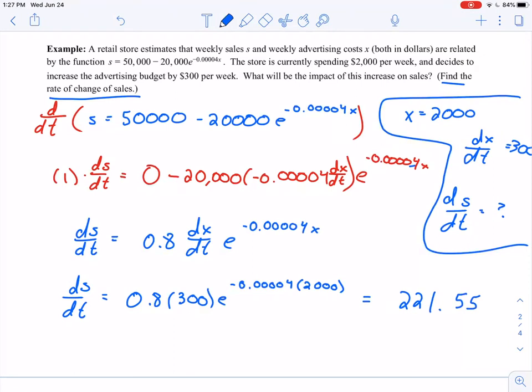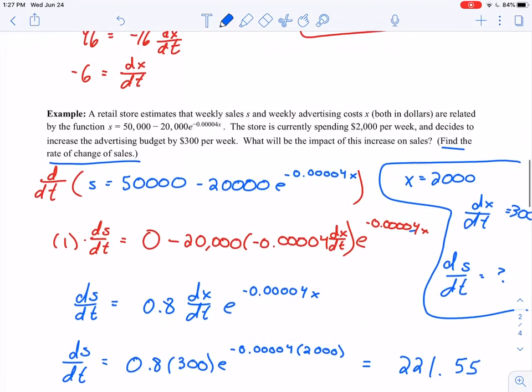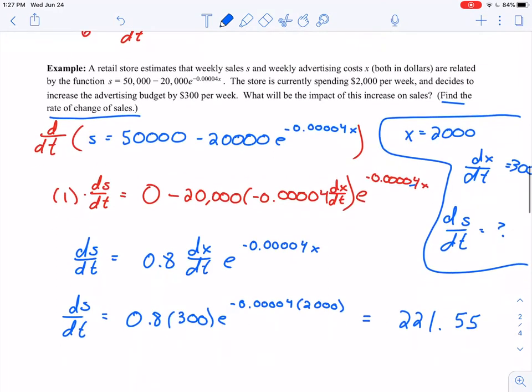Since we're talking about sales, we're measuring that in dollars. And actually, I should say, we're not necessarily just talking about sales. We're talking about the rate of change of sales with respect to time. So what are my units here? $221.55, and I actually just said it, $221.55 per, what is my unit of time? My unit of time per week right here, our problem said. So per week.